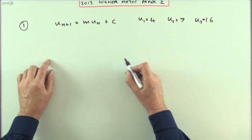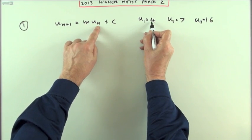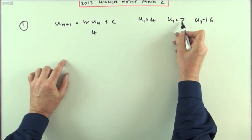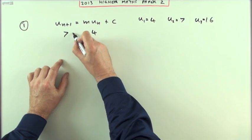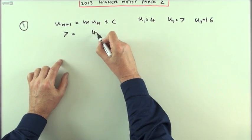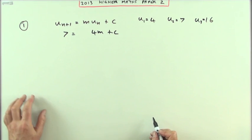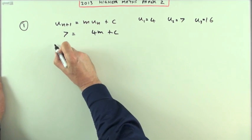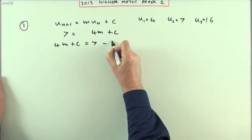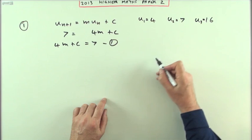If I take the first pair, if I start with 4, I'll get the answer 7. So 7 is going to equal m times 4 plus c, or 4m plus c. That's one equation. 4m plus c equals 7.